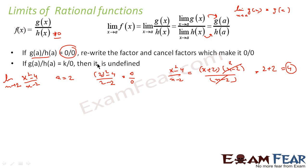So what we have done: first we wrote g(a) by h(a) and got 0 by 0. Since it was 0 by 0 form, we refactored by cancelling the factors which made it 0, and got x + 2. Putting x = 2 gives 2 + 2 = 4.